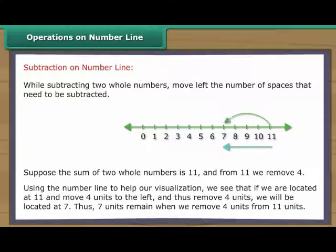we see that if we are located at 11 and move 4 units to the left and thus remove 4 units, we will be located at 7. Thus, 7 units remain when we remove 4 units from 11 units.